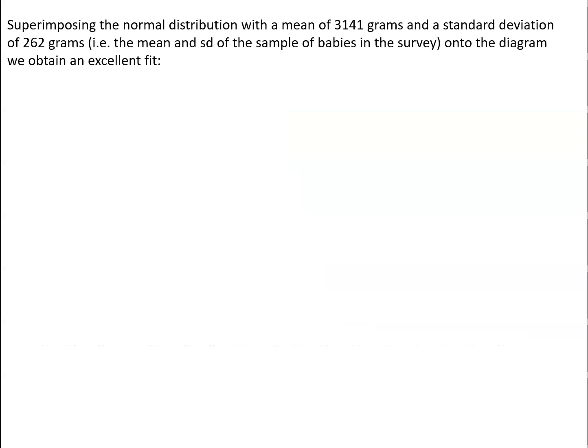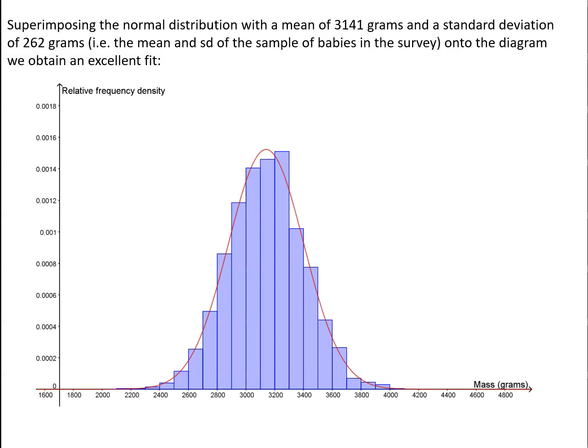Superimposing the normal distribution with a mean of 3,141 grams and a standard deviation of 262 grams, that is the mean and standard deviation of the sample of babies in the survey, we get a really good fit. So the red curve gives us the normal distribution and the blue bars are our histogram of results of the babies.